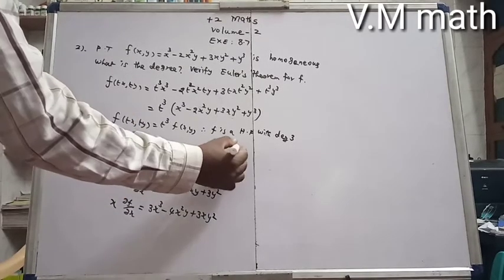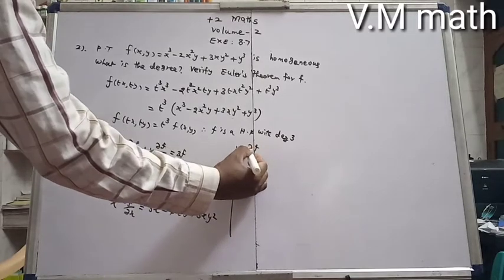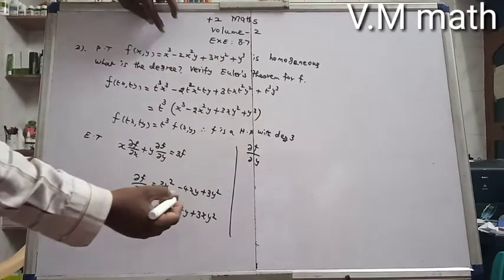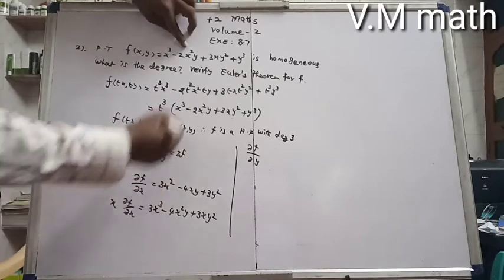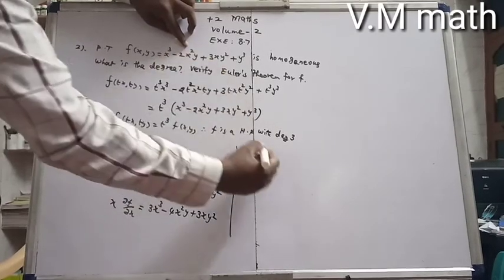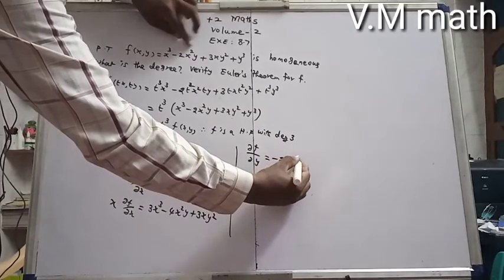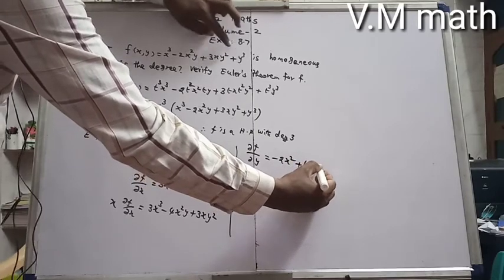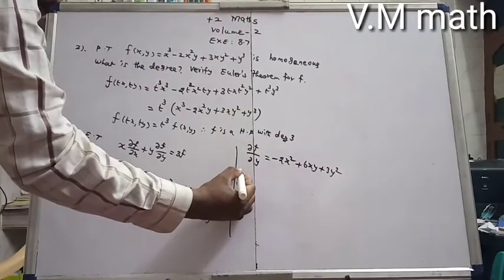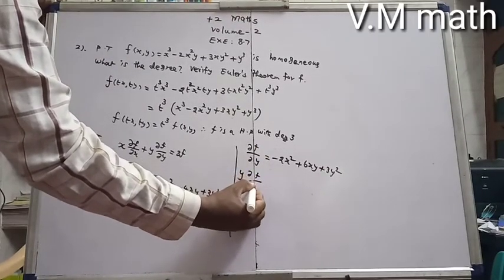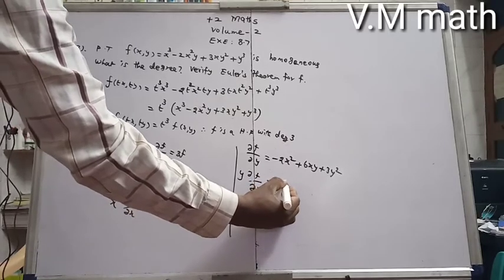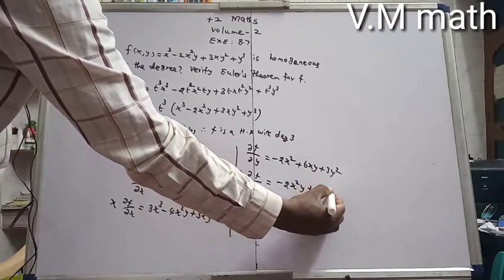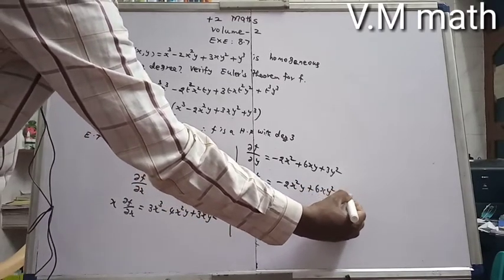Now differentiating with respect to y: ∂f/∂y = 0 - 2x² + 6xy + 3y². The x³ term is constant with respect to y, so it gives 0. Therefore, y · ∂f/∂y = -2x²y + 6xy² + 3y³.